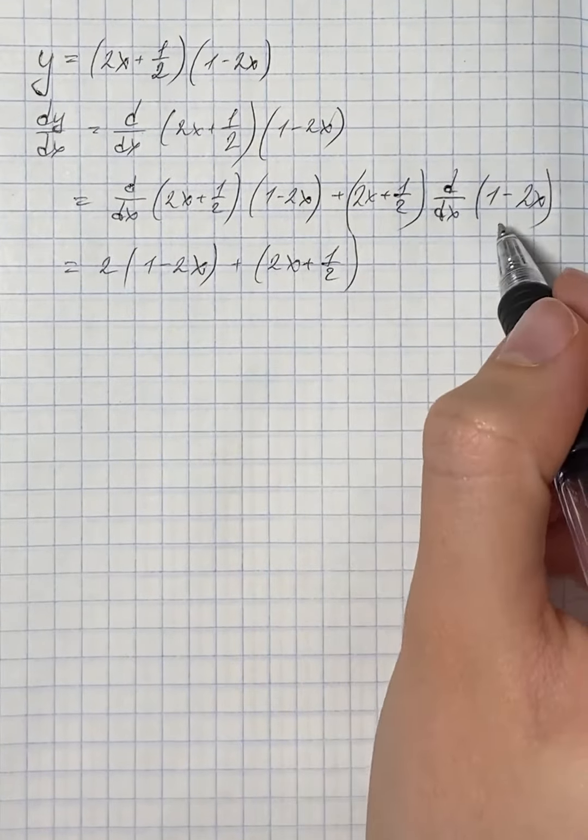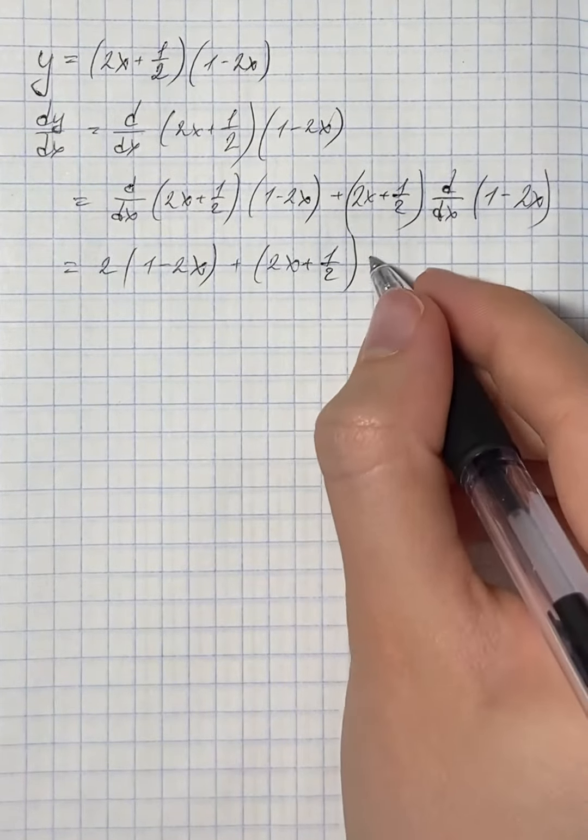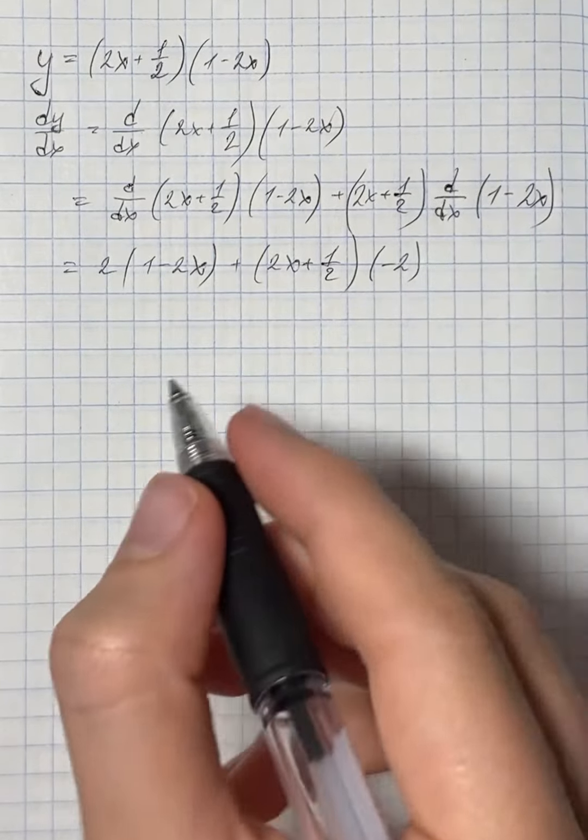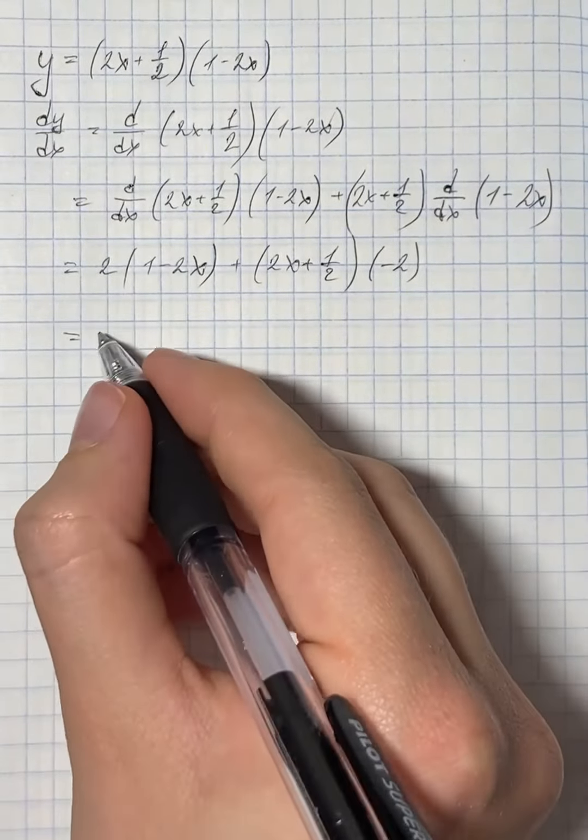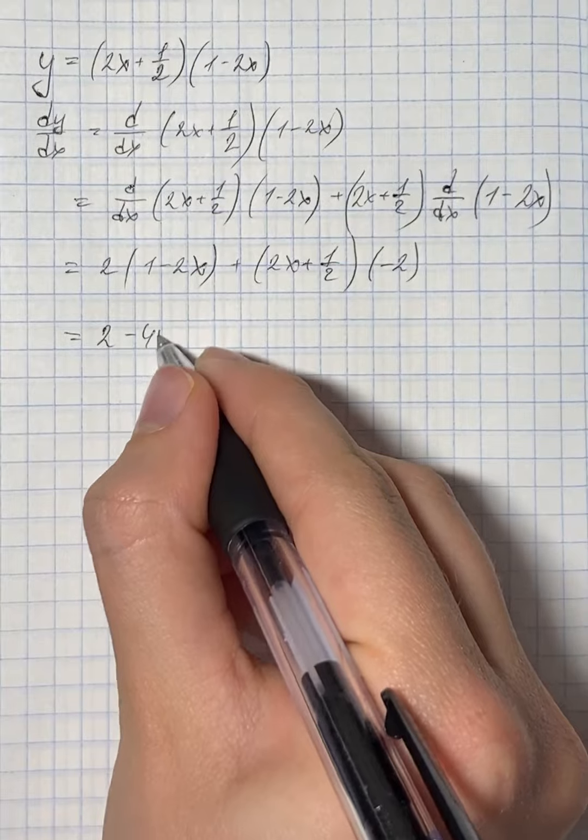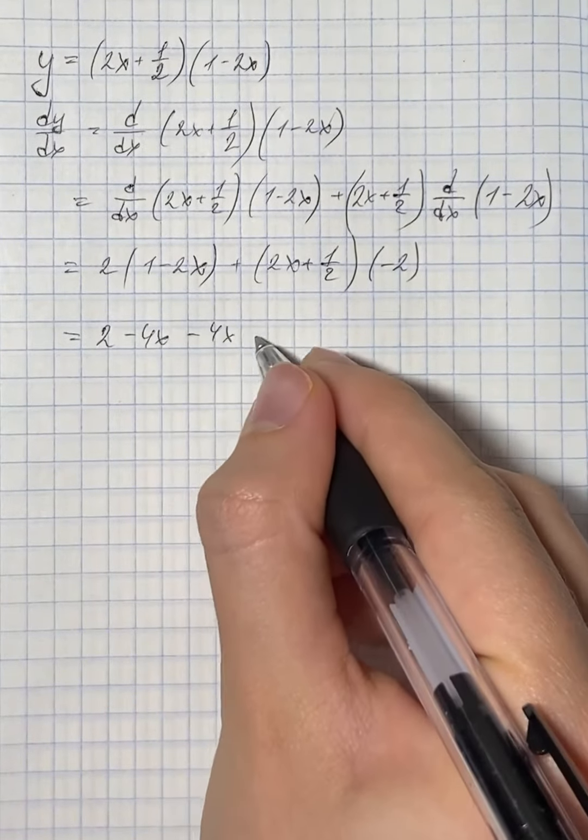And the derivative of 1 minus 2x is negative 2. So we expand the brackets and get 2 minus 4x minus 4x and minus 1.